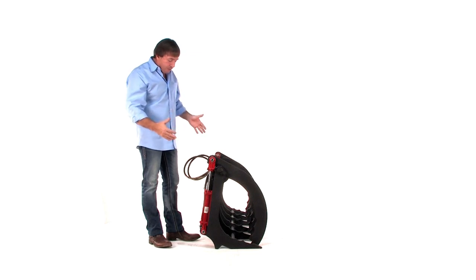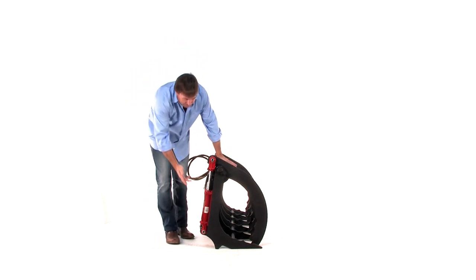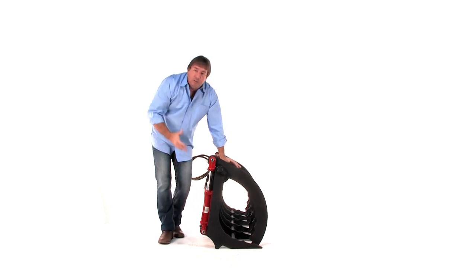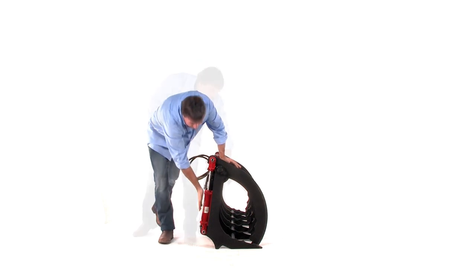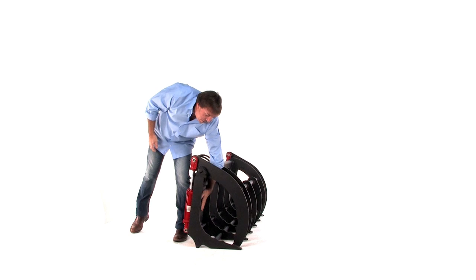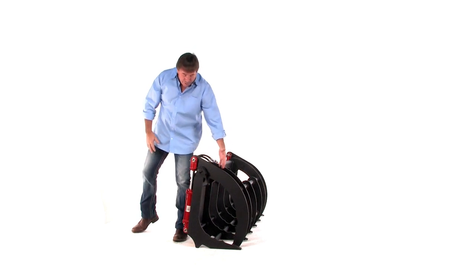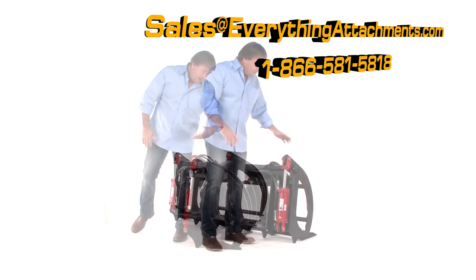Instead of the hoses on the Bradco and a lot of the others coming out the back where those fittings are really vulnerable to get hit, we've come out the side and we've put a plate right here so it completely covers every bit of the cylinder, every bit of the hoses so nothing can get back there to the cylinder from this side.